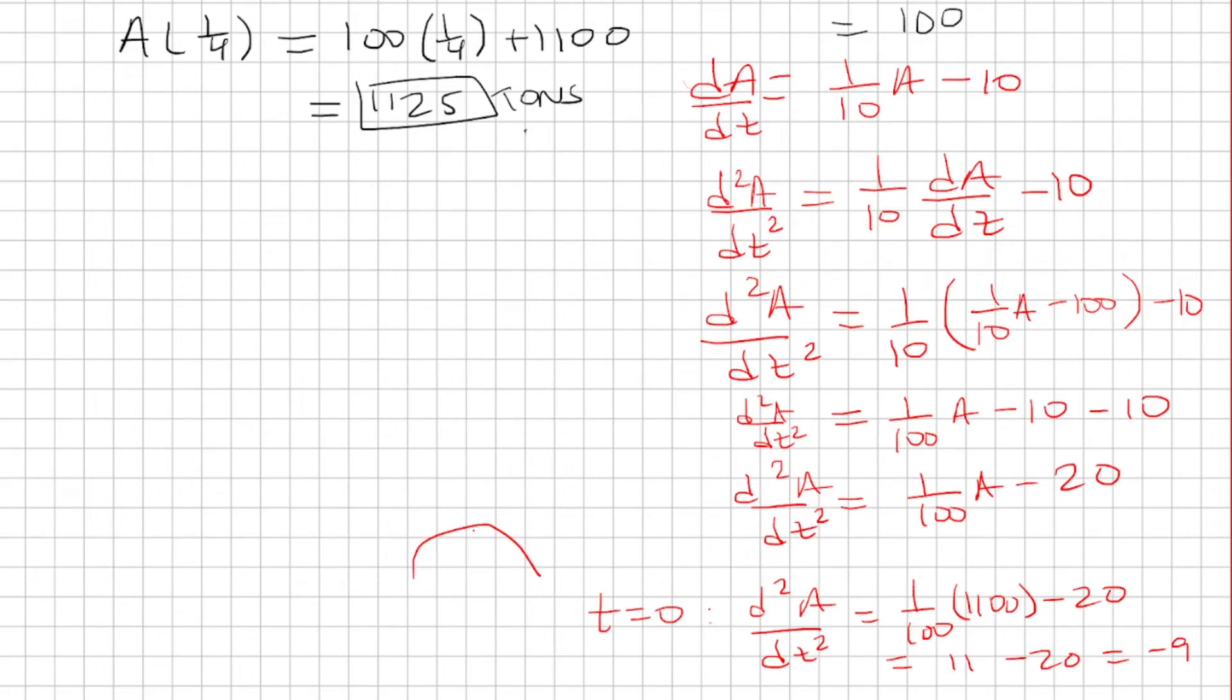So my function is going to be concave down. And I'm going to have a tangent line on a concave down function. Clearly, the tangent line is going to be above the function. So we'll say that the tangent line is going to be an overestimate.